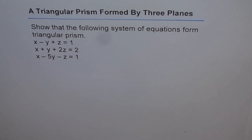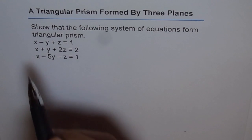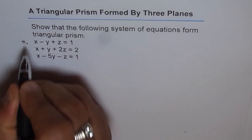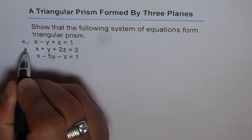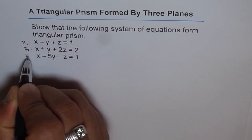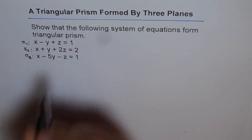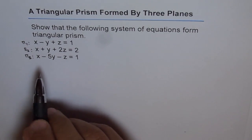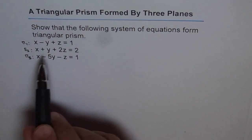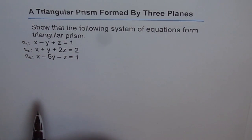We can see that these planes — let's label them as π1, π2, and π3. These three planes have normals that are not parallel, so they are not parallel planes.